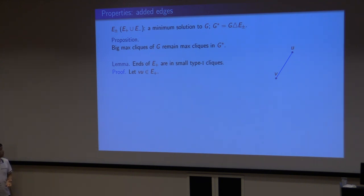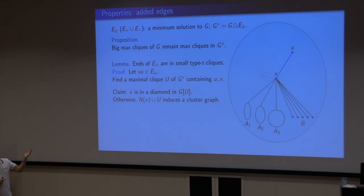Let's say a proof. Suppose that U and V is an edge in the minimum solution. For any edge, you can find a maximum clique containing that. Suppose Q is a maximum clique of G star containing U and V. The claim, first claim is V is in some diamond in Q, G induced by Q. Not G star. G star is diamond free. We claim there is a diamond. Suppose we show by contradiction. Suppose there is no such a diamond. What happens is, if V is not in any diamond, then the neighborhood of V has to be a cluster graph. If the neighborhood of V is not a cluster graph, you have P3, together with V, you have a diamond. A cluster graph is a bunch of cliques. Let's say A are the non-trivial cliques, each has at least two vertices. And B are the trivial cliques, each has only size one.